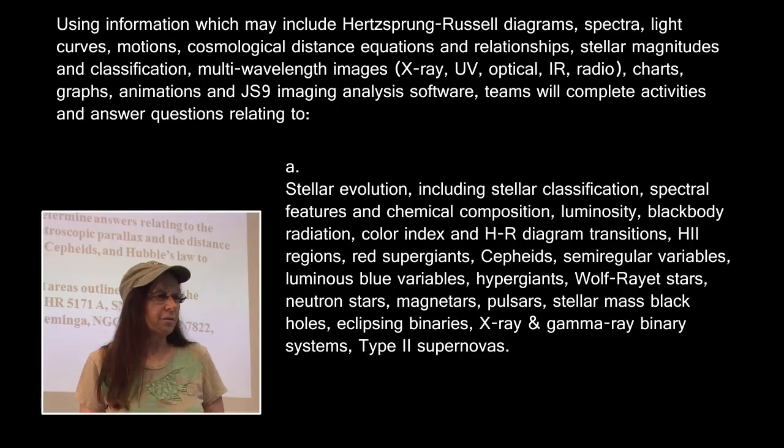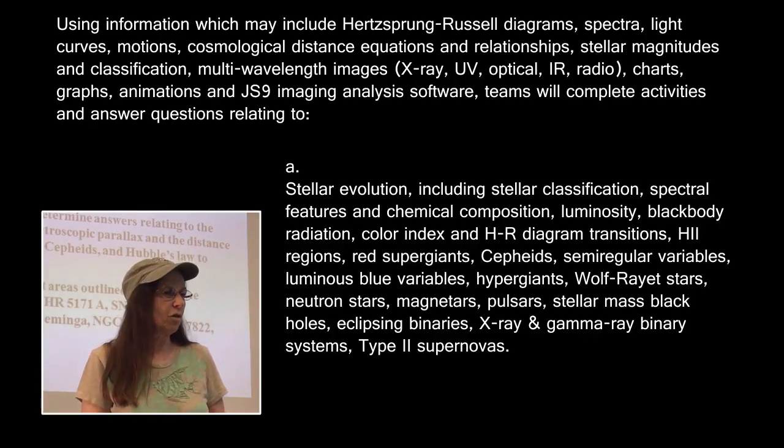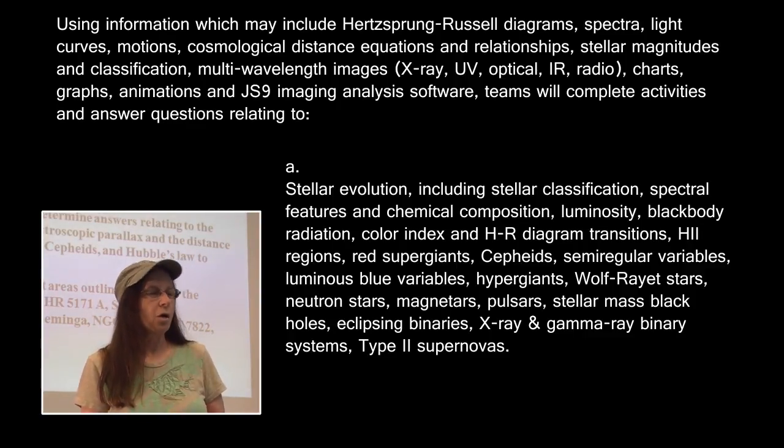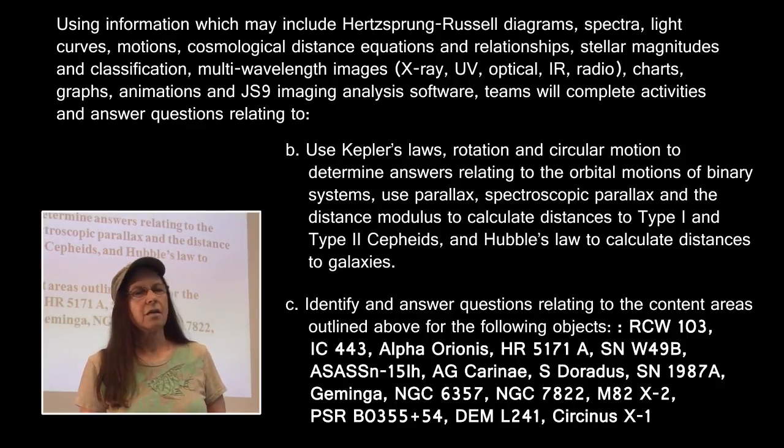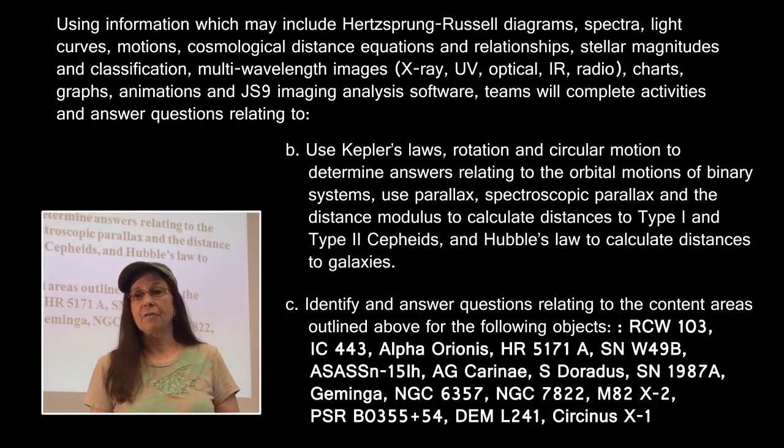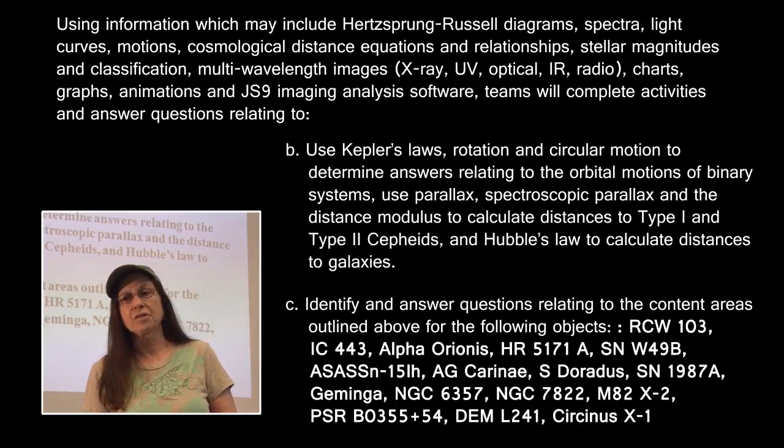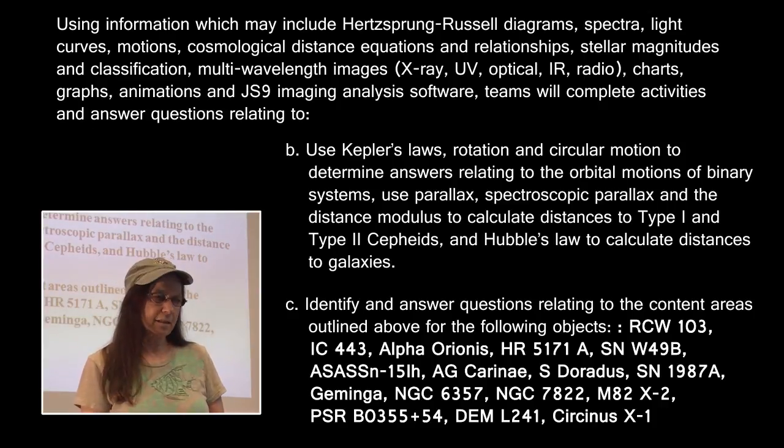The event description for Stellar Evolution includes things specific to Type II Supernova. Stellar evolutionary stages such as Cepheids, semi-regulars, the luminous blue variables, the massive hypergiant stars, Wolf-Rayet stars, magnetars, and black holes. We still have the same mathematical relationships: Kepler's laws, since many of these objects are in binary or multiple star systems, the distance modulus relating to the Cepheid variables to determine distances to galaxies, and of course Hubble's law to calculate distances to galaxies far, far away.